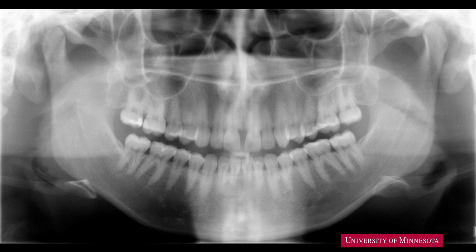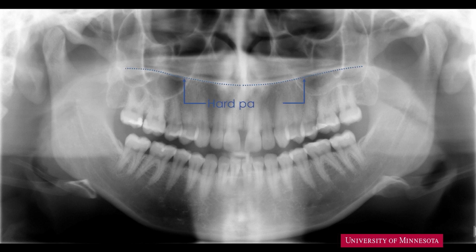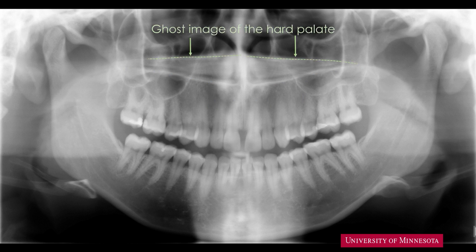Adjacent to the zygomatic process of maxilla is the wall of the maxillary sinus. Superior to the roots of the maxillary teeth is a linear radiopaque band — this is the hard palate. Superior to this well-defined appearance of the hard palate, there is a parallel fuzzy radiopaque line of contrast — this is the ghost image of the hard palate.